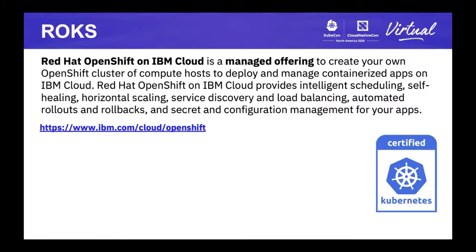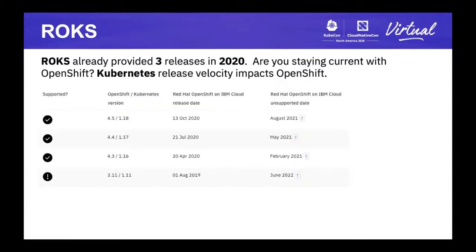Red Hat OpenShift on IBM Cloud, or the Red Hat OpenShift Kubernetes Service, is another managed service. OpenShift is built on Kubernetes, so this is also a Kubernetes-certified offering through the CNCF. Red Hat builds on that Kubernetes-based capability to give you additional functions. We've delivered three releases of ROKS this year, very similar cadence to IKS. Each version of OpenShift is based on a version of Kubernetes — the latest one, 4.5, is based on Kube 1.18. We fully expect a 4.6 soon based on Kube 1.19.